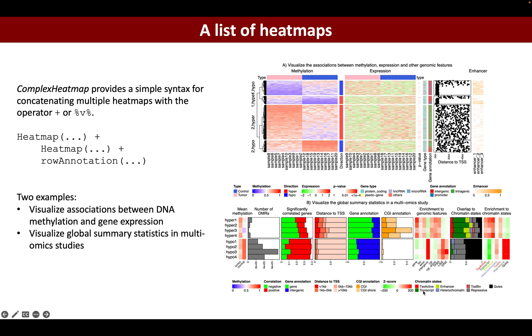Figure B shows another example of complex heatmap visualization for visualizing global summary statistics in multi-omics studies. There are methylation and their correlation to gene expression, the distance to TSS, annotation to CpG island, and enrichment to some other genomic features like genes, TSS, repeat regions, and different chromatin states. You can use this complex heatmap visualization to very easily see the correspondence of different information.